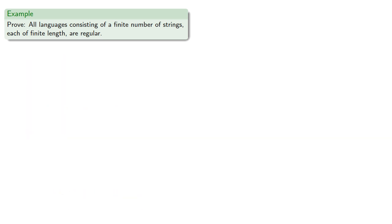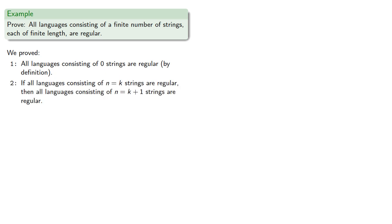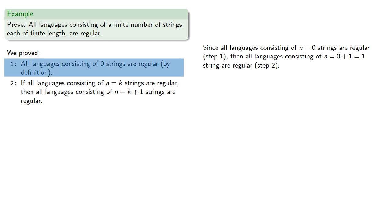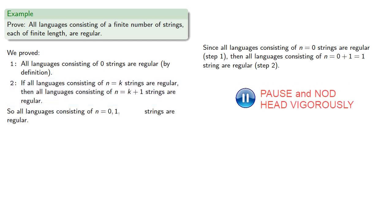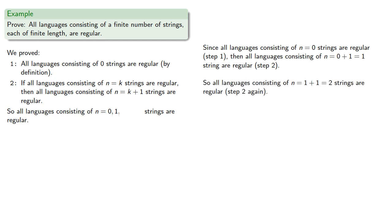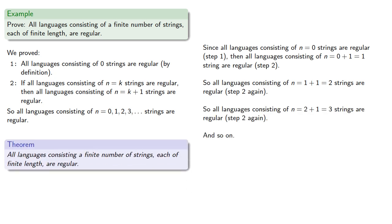And again, it never hurts to summarize. We proved that all languages consisting of zero strings are regular from our definition, and we also proved that if all languages consisting of n equals k strings are regular, then all languages consisting of n equals k plus one strings are also regular. Since all languages consisting of n equals zero strings are regular — that's step one — then all languages consisting of zero plus one, that is one, string are regular — that's step two. So all languages consisting of one plus one, that is two, strings are regular; and all languages consisting of two plus one, that is three, strings are regular, and so on. Which gives us our theorem: all languages consisting of a finite number of strings, each of finite lengths, are regular.